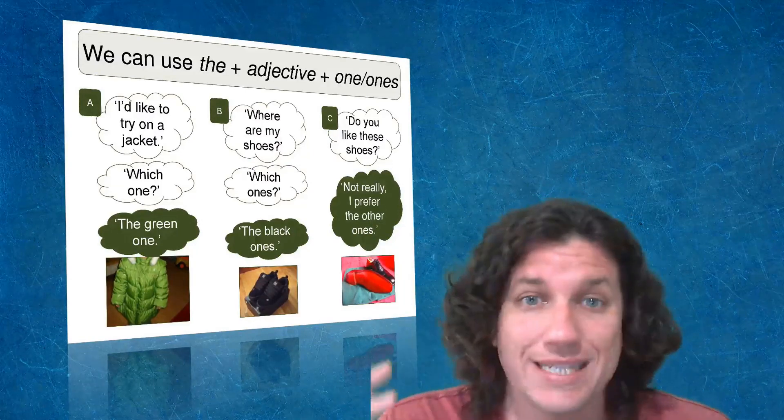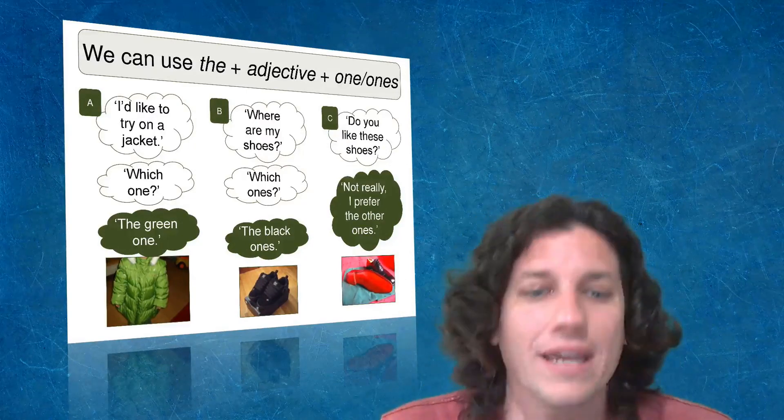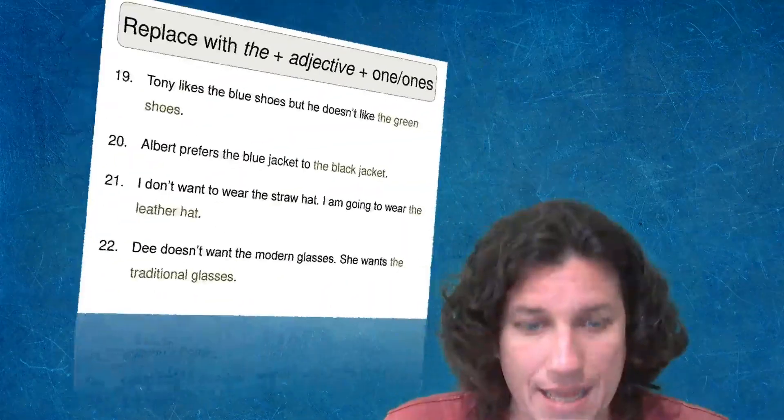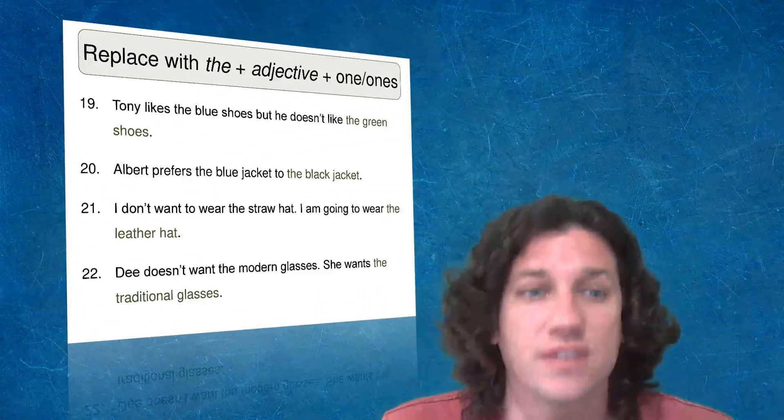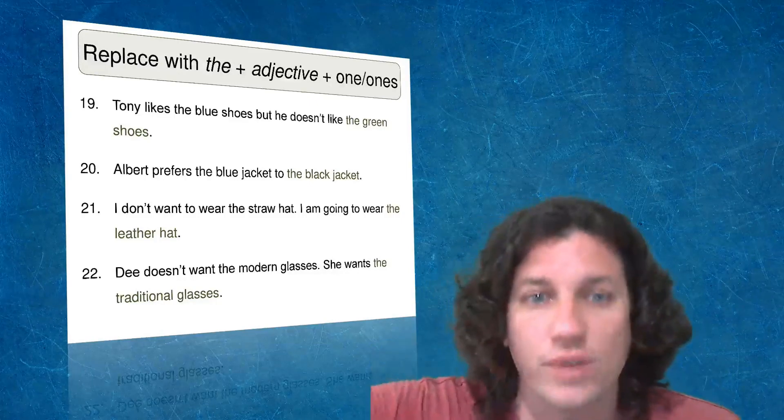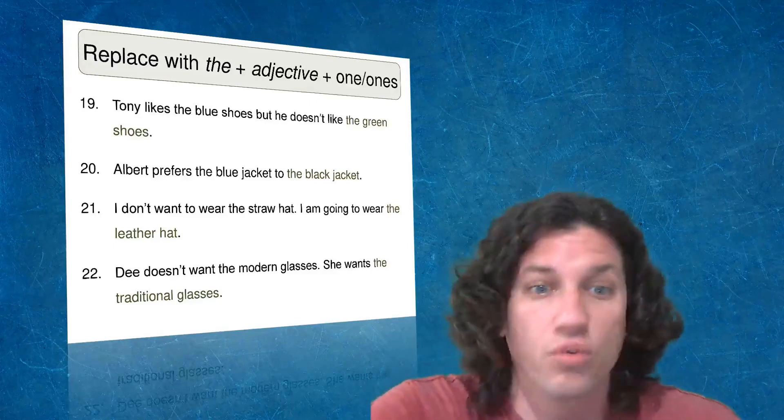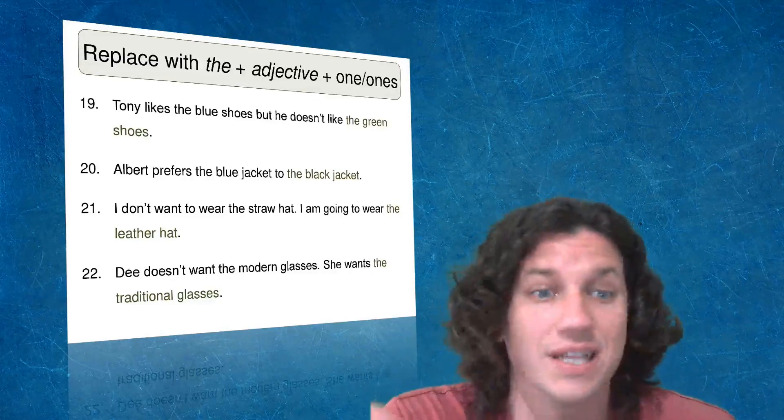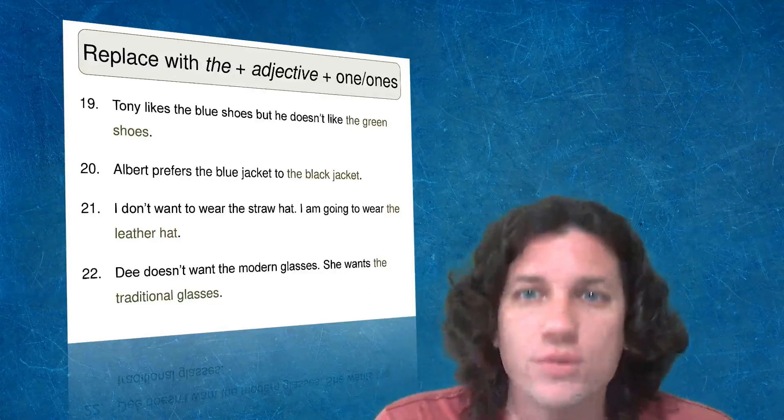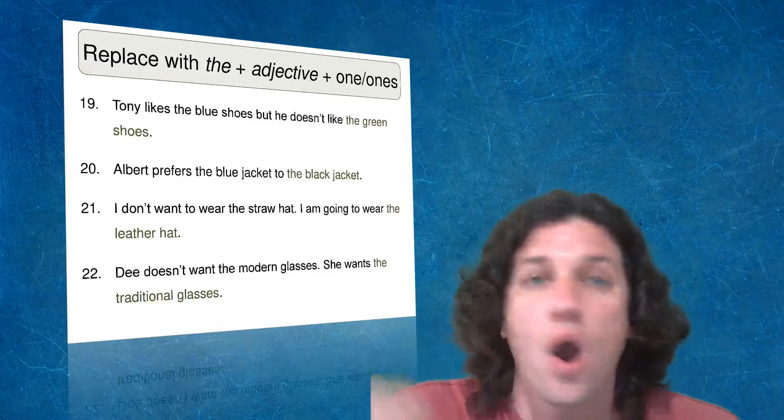Now, once your students see this slide, it's going to be simple enough, but then you want to give them the chance to practice it themselves. And what better way to do that than by setting them up with sample sentences with something to replace. Tony likes the blue shoes, but he doesn't like the green shoes. Here's a great place for your students to practice by saying the green ones, the black ones, the leather ones, the traditional ones. By drilling this with your students a few times, you're going to give them the confidence they need to be able to say, oh wow, I know how to use this and I can do it in the real world.